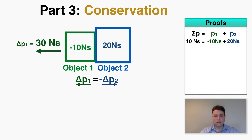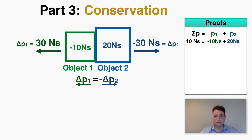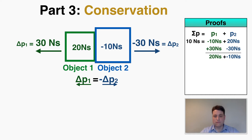Based on what I just showed you, if object one is experiencing a leftward impulse of 30 Newton-seconds, then object two is experiencing a rightward impulse of 30 Newton-seconds — so I'll consider that negative. Remembering that impulse equals the change in momentum, object one's momentum is changing by positive 30 Newton-seconds and object two's momentum is changing by negative 30 Newton-seconds.